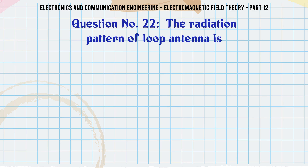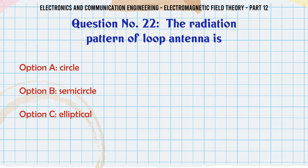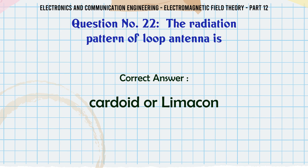The radiation pattern of a loop antenna is: A. Circle, B. Semi-circle, C. Elliptical, D. Cardioid or Limaçon. The correct answer is Cardioid or Limaçon.